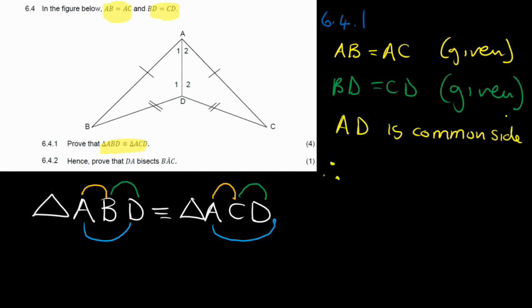And then, now we can say, therefore, we will have triangle ABD is congruent. Remember congruency, it's like an equal sign with an extra line. Is congruent to triangle ACD. And what will be the reason? It will be side, side, side.